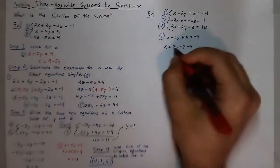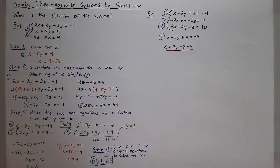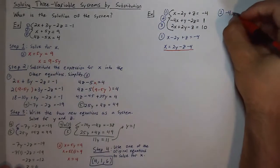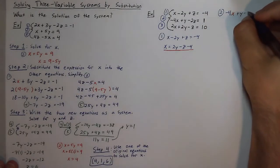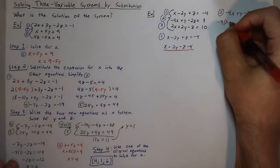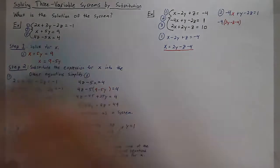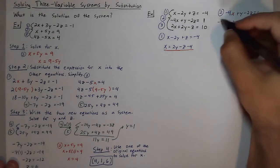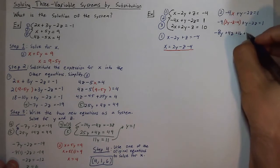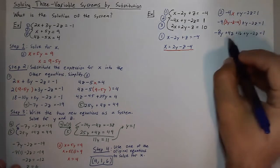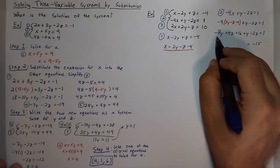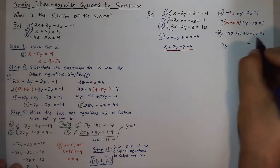Now that I have what x is equal to, I'll look at equations 2 and 3 and substitute into them. Equation 2 is negative 4x plus y minus 2z, so it becomes negative 4 times (2y minus z minus 4) plus y minus 2z. Distributing the negative 4 gives me negative 8y plus 4z plus 16 plus y minus 2z equals 1. Subtracting 16, I get negative 15 on the right. Negative 8y plus y is negative 7y, and 4z minus 2z is plus 2z.